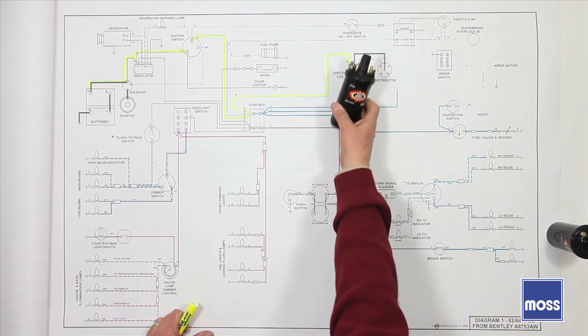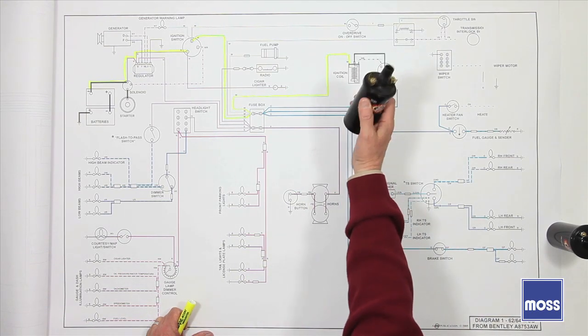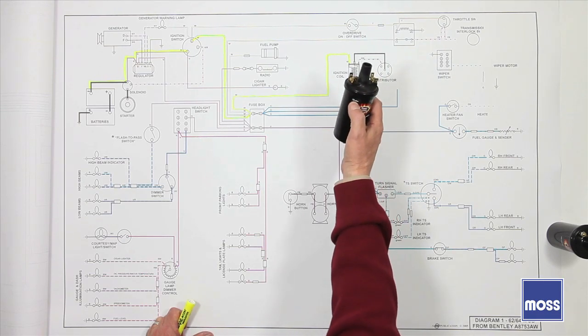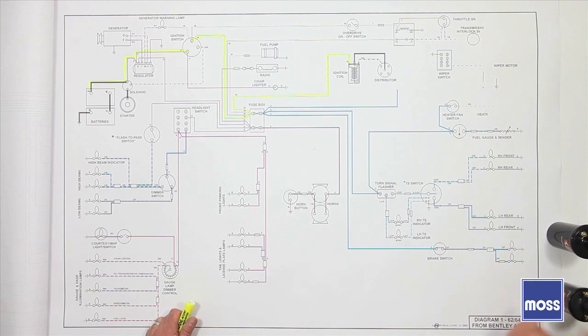We learned that originally coils with 3 ohms of resistance were used and they worked beautifully in a 12 volt system, but they could not do their job when the voltage began to fall.